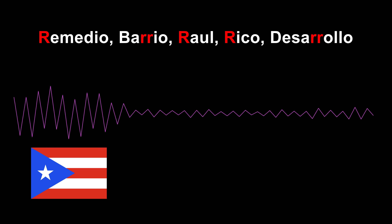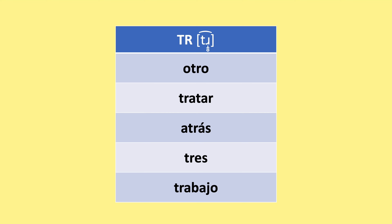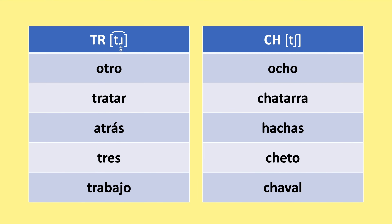The TR combination: in some dialects, R coming after a T has a sound similar to English — it's a 'ch'-like T sound — such as in otro, tratar, atrás, trabajo. Don't confuse it with the CH sound though. So it's 'ocho' and not 'ocho' — the distinction matters.